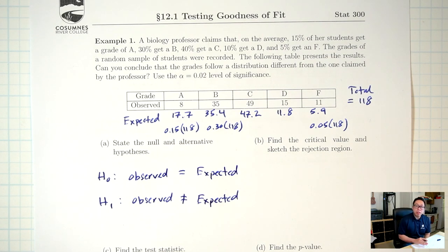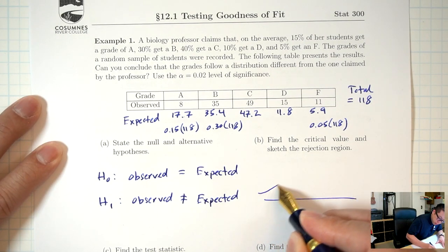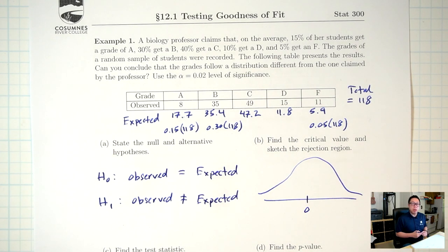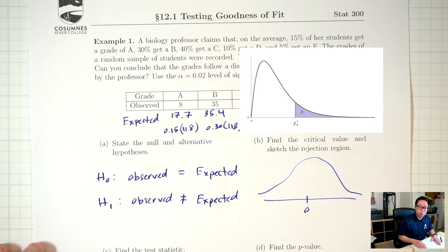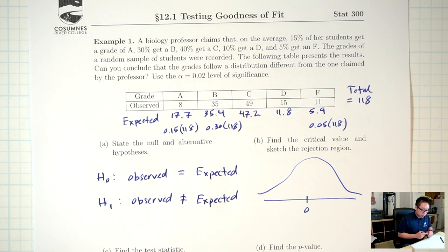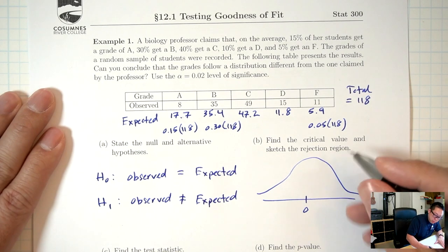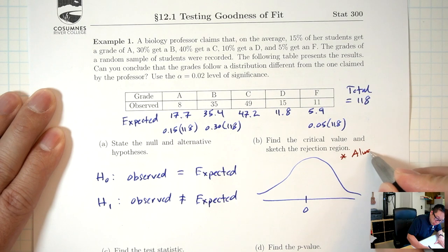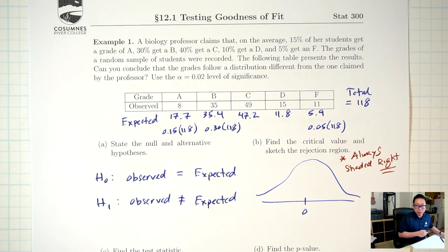The null hypothesis H0 is: observed equals expected. Part B: find the critical value and sketch the rejection region. For a goodness-of-fit test, even though the alternative says 'not equals,' the picture is always shaded to the right — unlike the other hypothesis tests where 'not equals' gives a two-tailed picture.